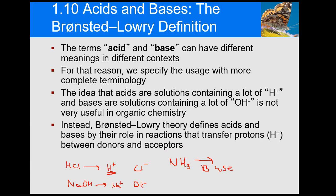So Bronsted-Lowry said we have to come up with another way of defining what an acid or base is. Arrhenius was probably 50 to 100 years before Bronsted-Lowry and explains maybe 90–95% of molecules. But Bronsted-Lowry explains everything about acid-base behavior, including ammonia, not just HCl and sodium hydroxide.